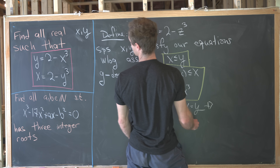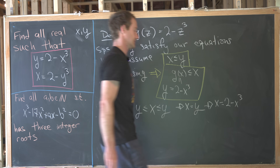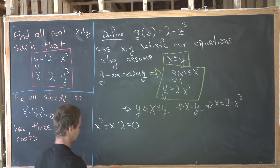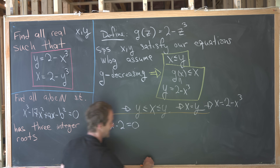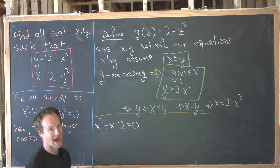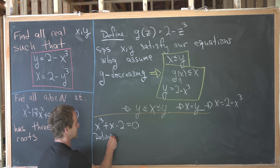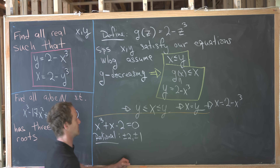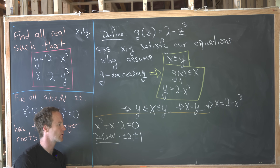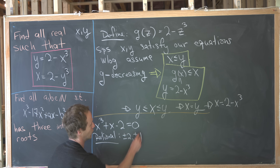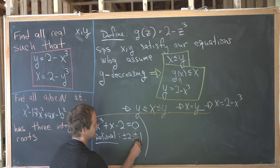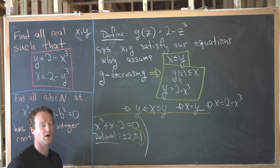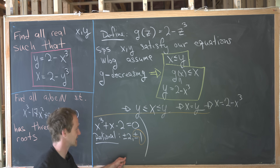We can plug y equals x into the equation, giving us a cubic polynomial to solve. We need to solve x equals 2 minus x cubed, which is the same as x cubed plus x minus 2 equals 0. Using the rational root theorem, the possible rational roots are plus or minus 2 and plus or minus 1. Checking quickly, the only rational root is positive 1.